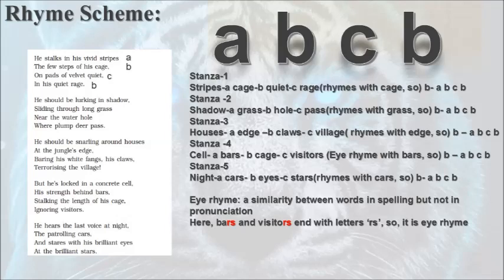In stanza 4, when you look closely, 'bars' and 'visitors' don't rhyme exactly the way the other words rhymed, but they end with the same combination of letters 'RS'. So they can be said to be eye rhymes. An eye rhyme is a similarity between words in spelling but not in pronunciation. In stanza 5, 'cell' is A, 'bars' is B, 'cage' is C, and 'visitors' — as it eye-rhymes with 'bars' — is B again. So the rhyme scheme of the poem is ABCB.